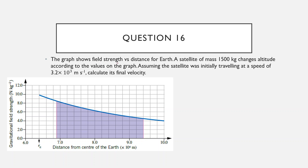The graph shows field strength versus distance for earth — notice the vertical axis is field strength, not force. A satellite of mass 1500 kilograms changes altitude according to the values shown in the graph, decreasing its height from here to here. Assuming the satellite was initially traveling at a speed of 3.2×10³ meters per second, calculate its final velocity. There's a lot going on in this question, so we need to unpack it.